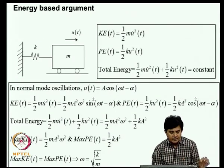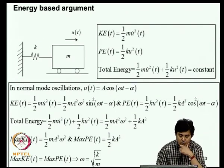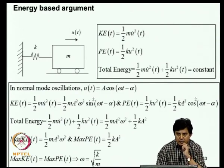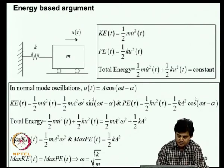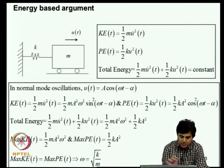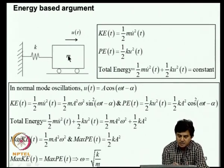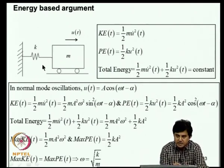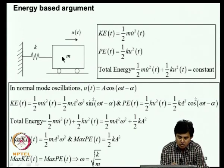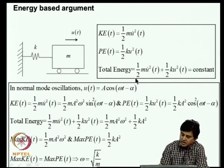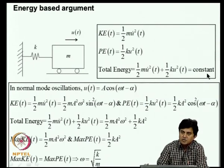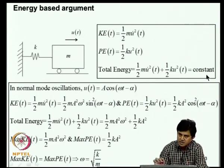Rayleigh's quotient can also be derived from an energy argument. For a simple mass-spring system with no energy dissipation, the total energy is conserved. The kinetic energy is (1/2)*m*u_dot^2 and the potential energy is (1/2)*k*u^2, and their sum is constant.